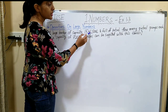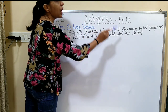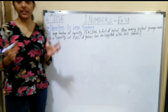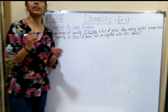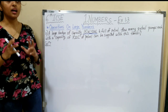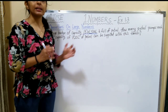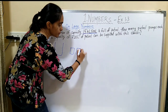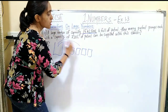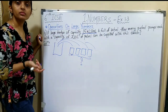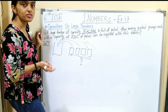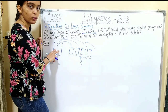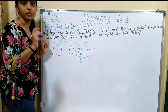The next question: a large tanker of capacity 15 kilolitres 500 liters is full of petrol. How many petrol pumps, each with a capacity of 720 liters, can be supplied with this tanker? We need to divide the tanker's capacity by the capacity of each petrol pump to get the number of pumps.